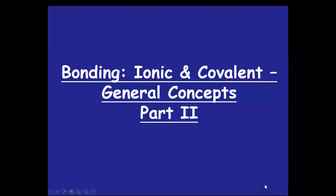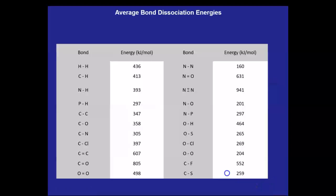This is part two of the ionic and covalent general concepts of bonding. So let's look at this chart. Here we have average bond dissociation energies.